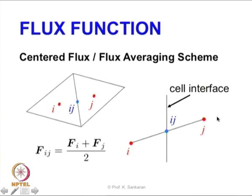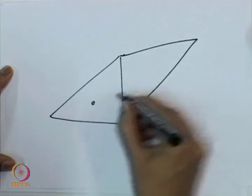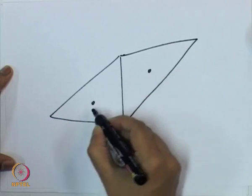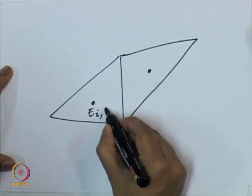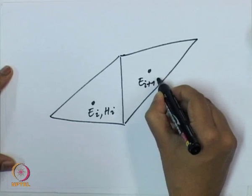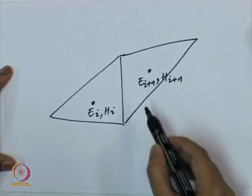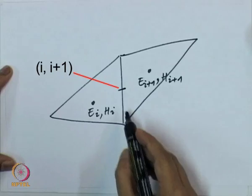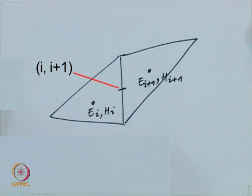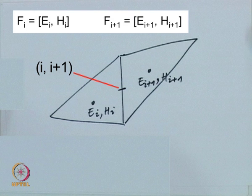Whatever value we are talking about, we might have the E field given at the center. We say E_i, H_i here and E_{i+1}, H_{i+1} there. We are going to say the field at this interface point will be the flux that is basically the average of these two: if flux on the left side is f_i and the flux on the right side is f_{i+1}, we take the average.